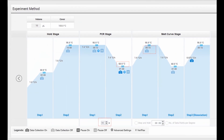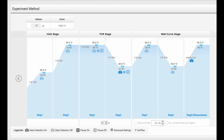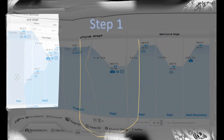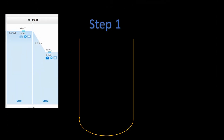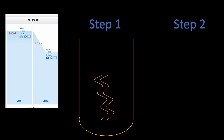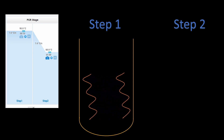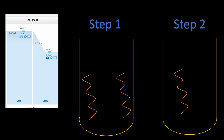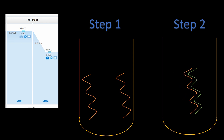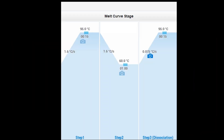In RT-PCR, there are two major stages. The first stage is called the PCR stage, which has only two steps. In the first step, we provide a temperature of 95 degrees Celsius, which separates the DNA strands. In the second step, we provide a temperature at which our primers will anneal or connect with the cDNA, followed by elongation or formation of new DNA strands.